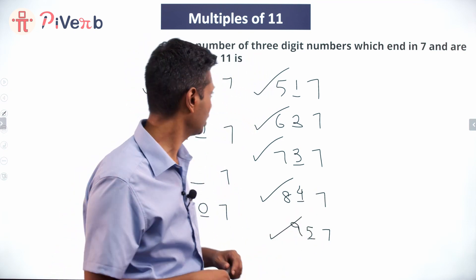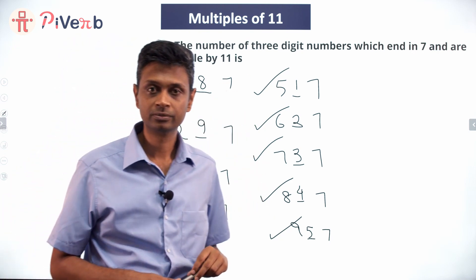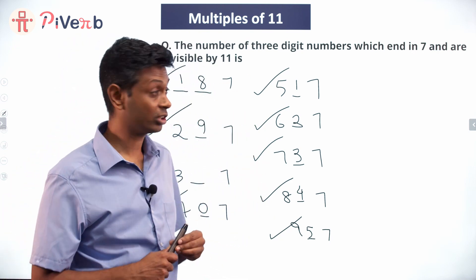So there are 1, 2, 3, 4, 5, 6, 7, 8 numbers—8 numbers that are possible totally.